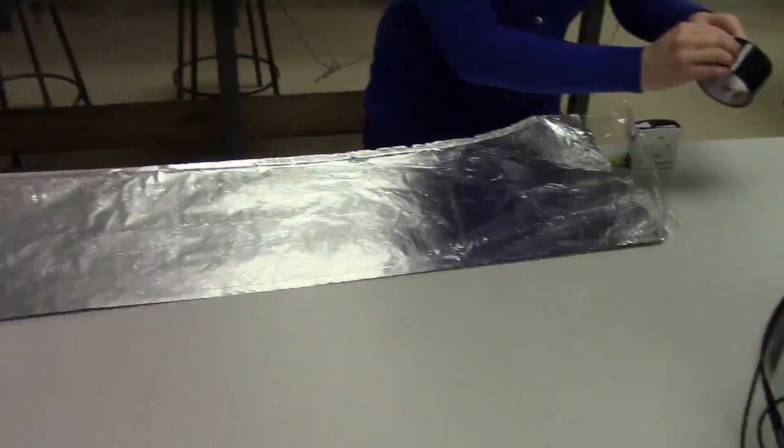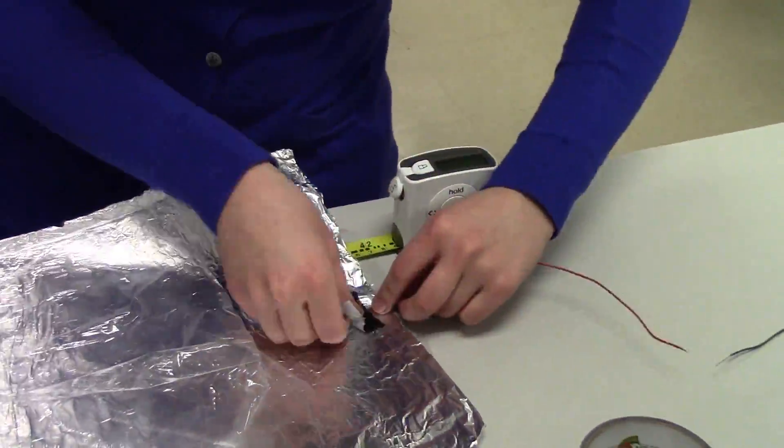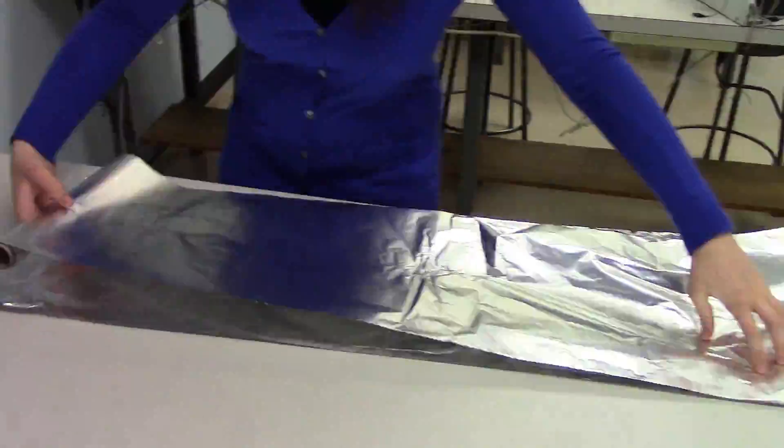You can build a capacitor from materials you can find at home. Here, we've built one by separating two conductive sheets of aluminum foil with a sheet of plastic.